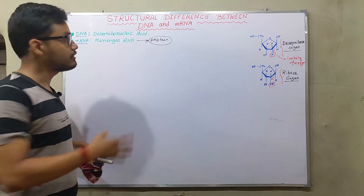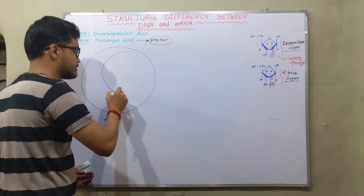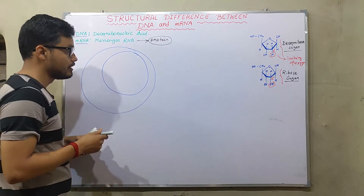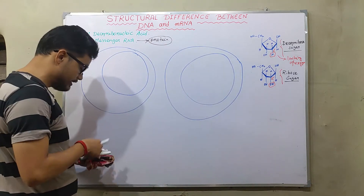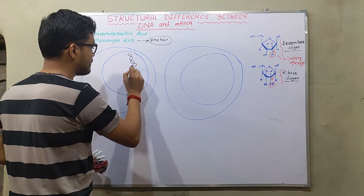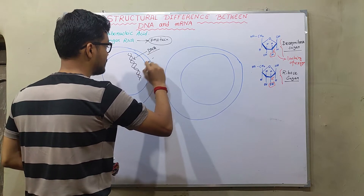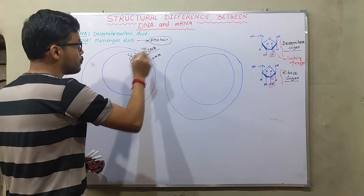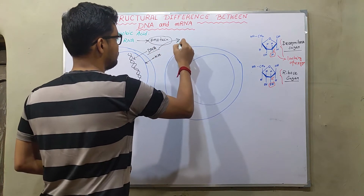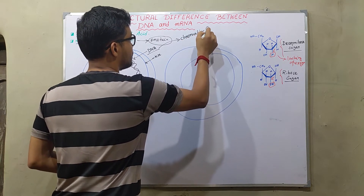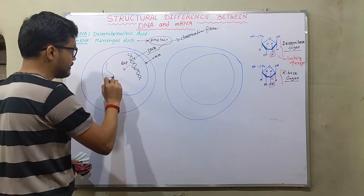To understand the synthesis and procedures, let's draw a cell with its nucleus — I've made the nucleus large so we can understand the topic. In the case of DNA, it is present inside the nucleus in the form of chromatin fiber. So DNA is present inside the nucleus, within the nuclear membrane, in the form of chromatin fiber.